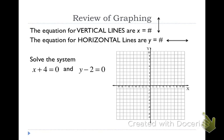So let's take a look at this system that I want you to solve. It's x plus 4 equals 0, and y minus 2 equals 0. The very first thing I have to do is get my variables by themselves. So on this one, I'm going to subtract 4 from both sides, and I'm going to get x equals negative 4.